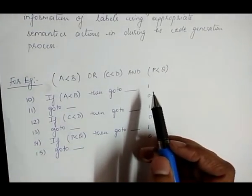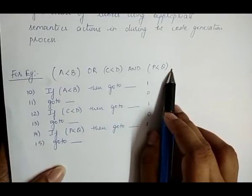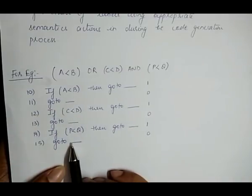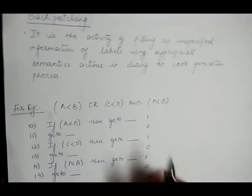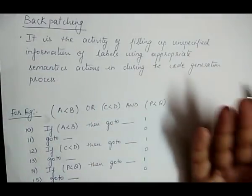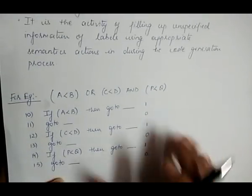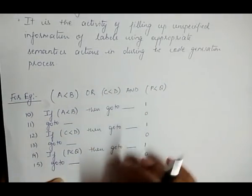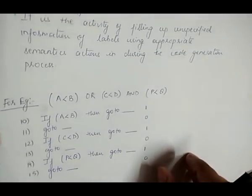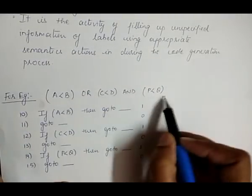So we have written the three-address code for this expression, but we have not filled all these label values yet. With the help of backpatching we fill up these unspecified labels with appropriate semantic actions while generating the code. Now let's understand how we fill these label values using backpatching.